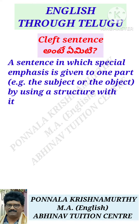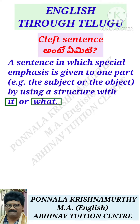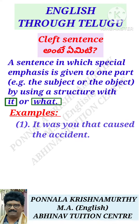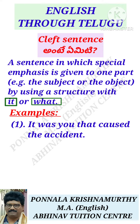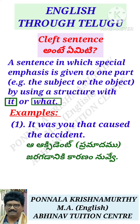A cleft sentence is a sentence in which special emphasis is given to one part — e.g., the subject or the object — by using a structure with 'it' or 'what'. For example: 1. 'It was you that caused the accident.' 2. 'What I need is a book.'